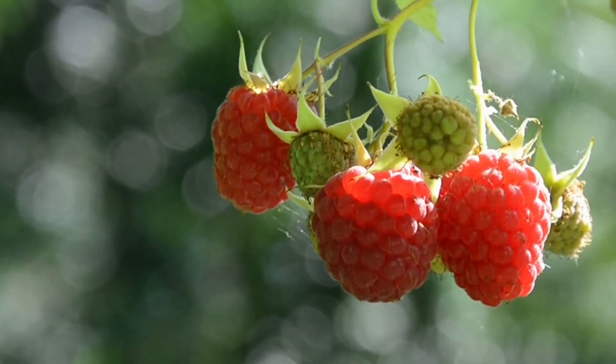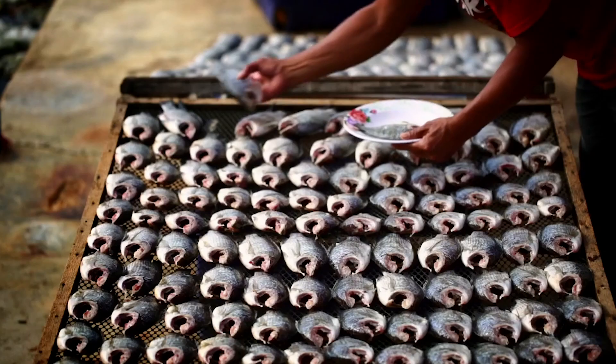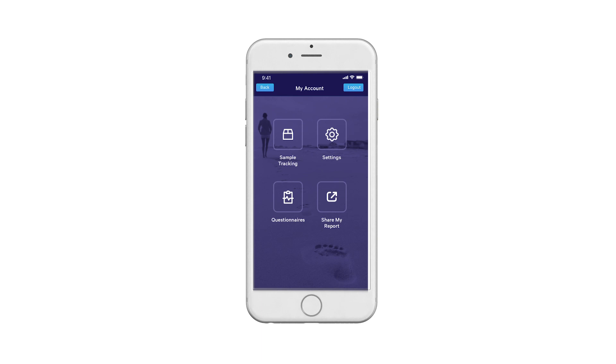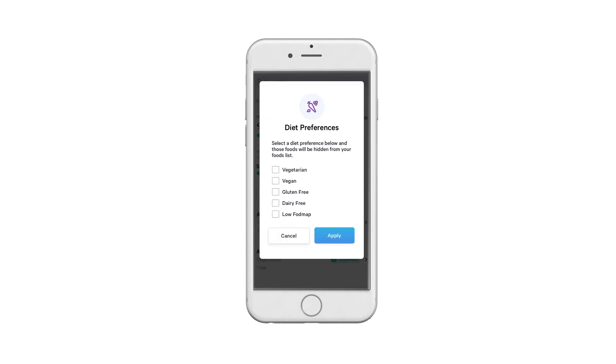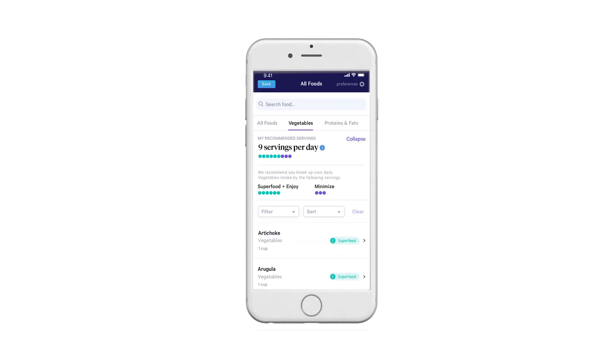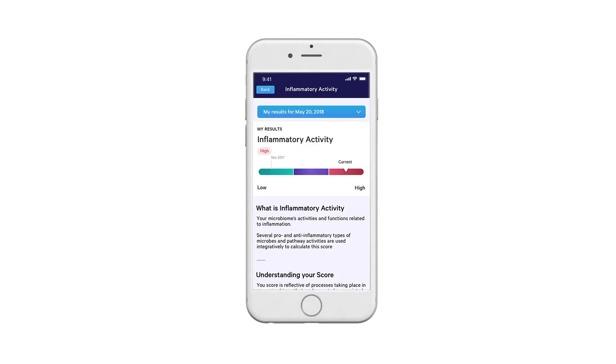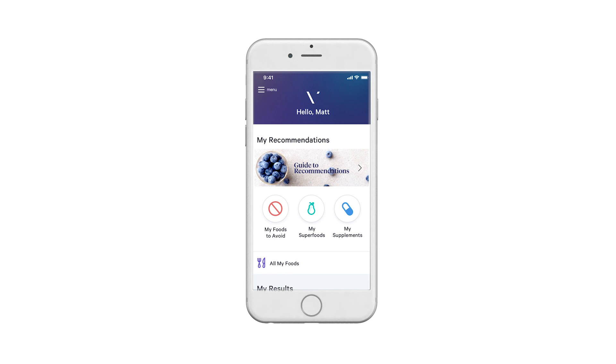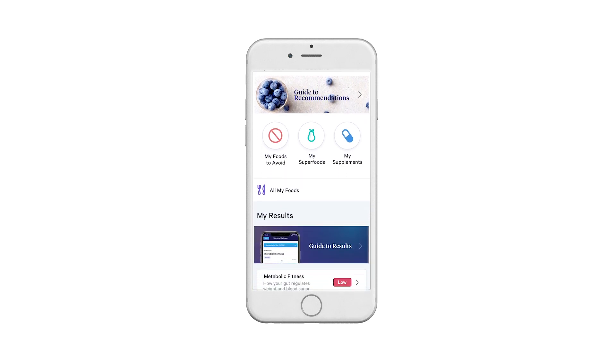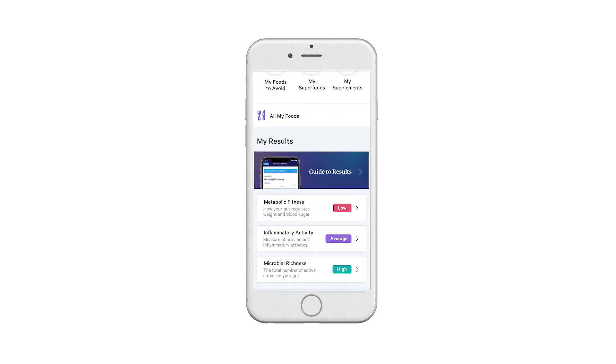There is no such thing as a universal healthy diet. We deliver personalized food recommendations right into your phone based on the predicted response of your microbiome to hundreds of foods. So this way you know which foods you should enjoy, minimize, and avoid based on your unique gut microbiome.